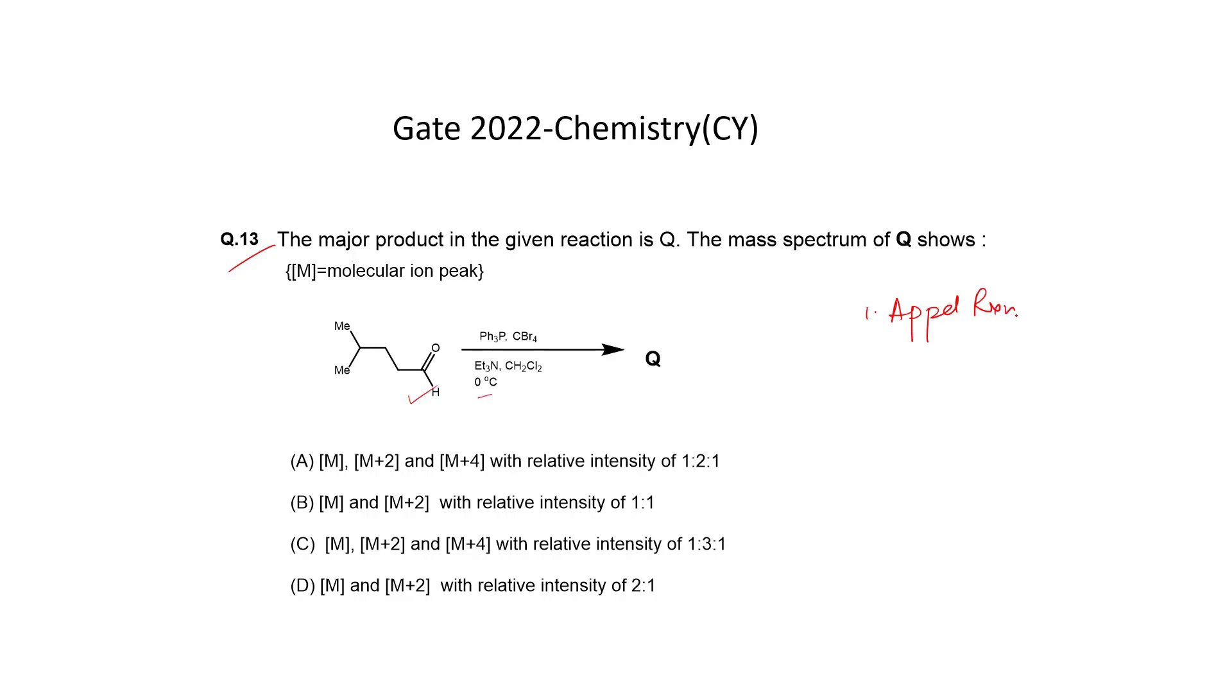One is Appel reaction and another is Corey-Fuchs reaction. Appel reaction actually starts from a hydroxyl group, but here there is an aldehyde, so it must be a Corey-Fuchs reaction.